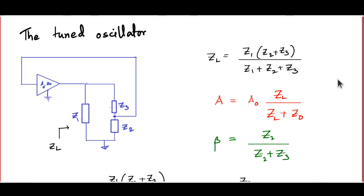Since A or beta or both could be complex numbers, this is really a complex number relation — two relations in one. One states that the real part of A·beta has to equal 1. The other states that the imaginary part of A·beta must vanish. We also saw several examples of circuits implementing the Barkhausen criterion, such as the Wien-bridge oscillator and phase shift oscillators.